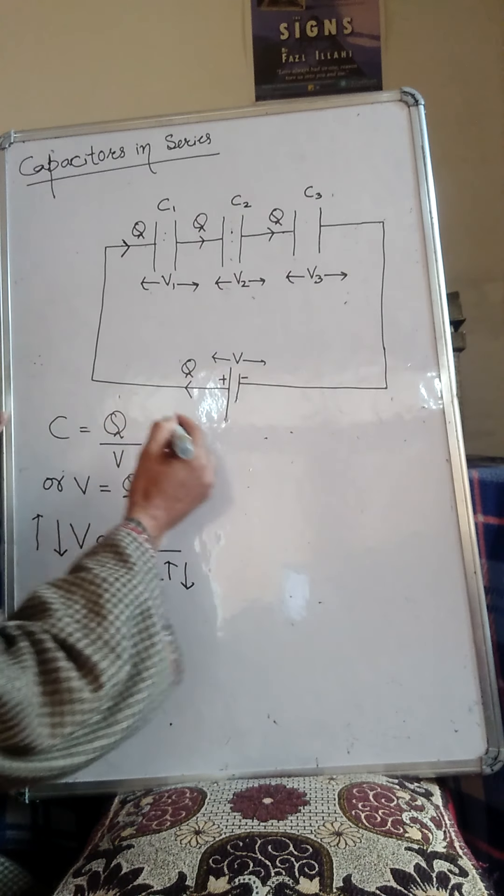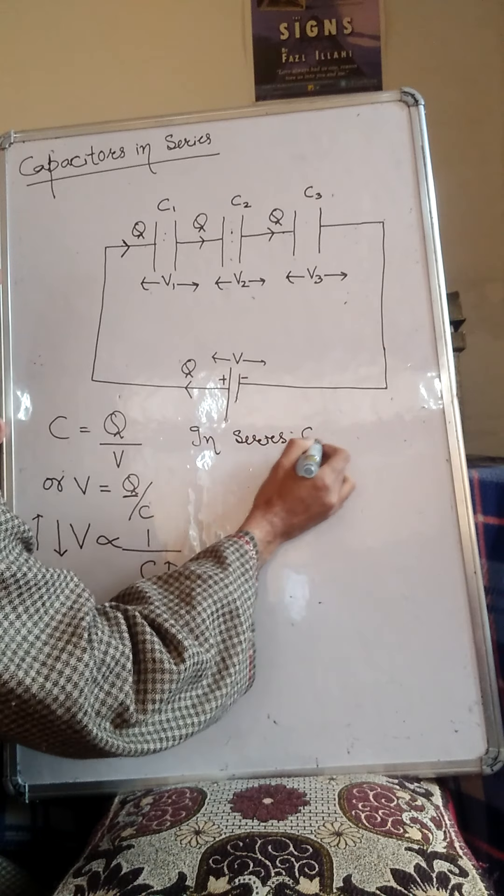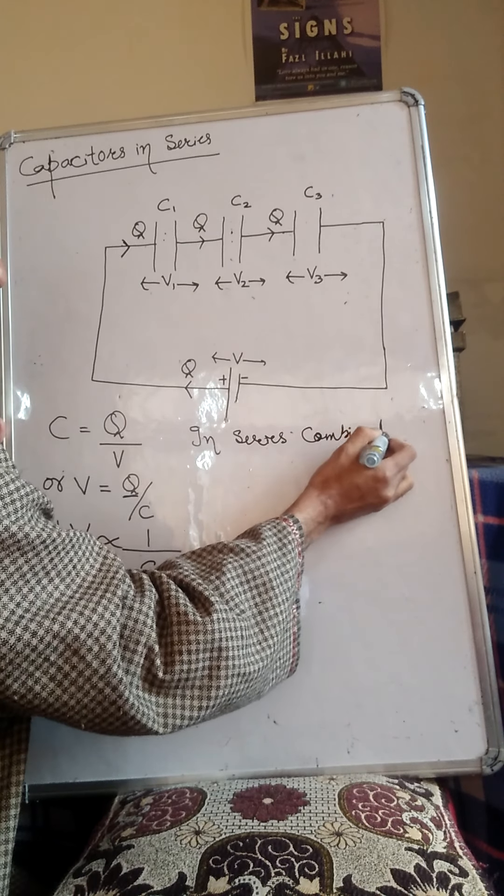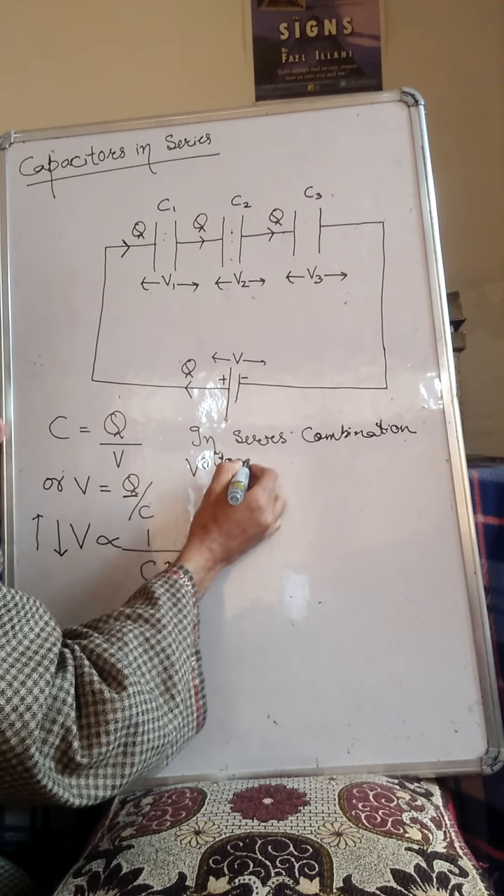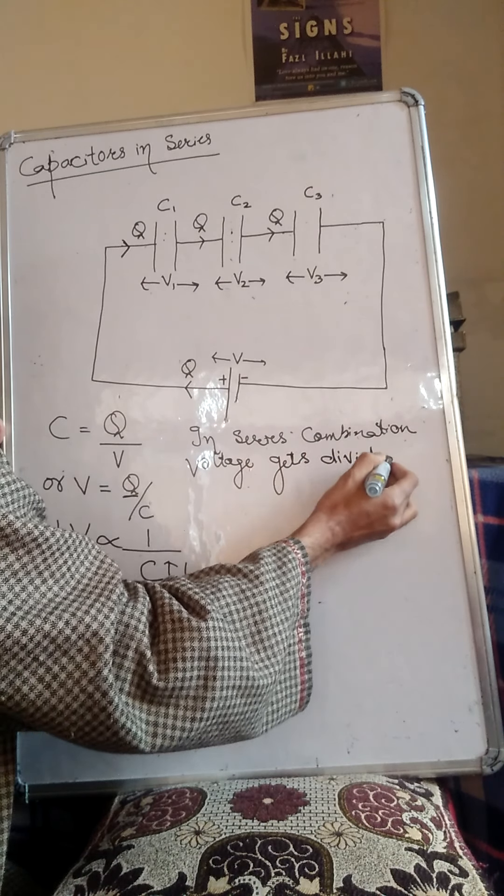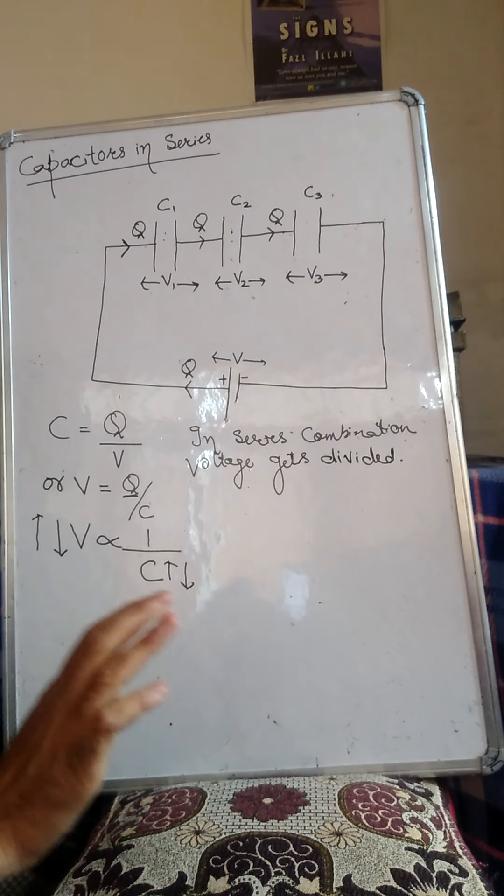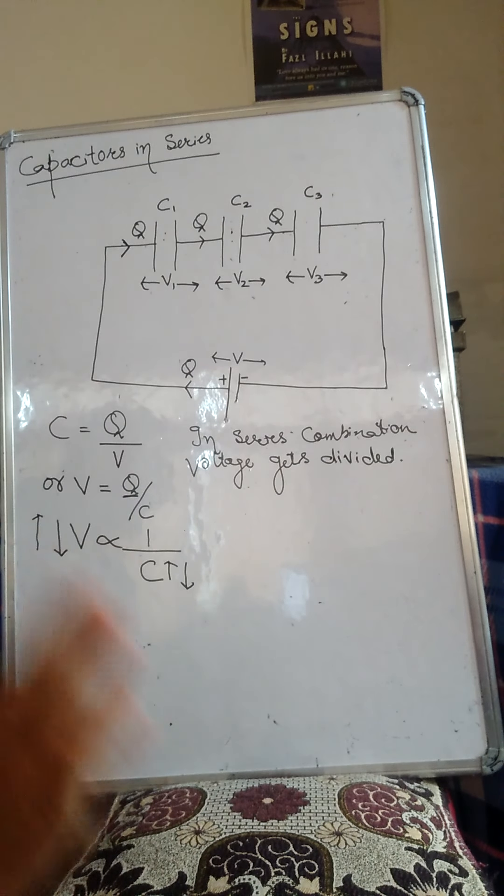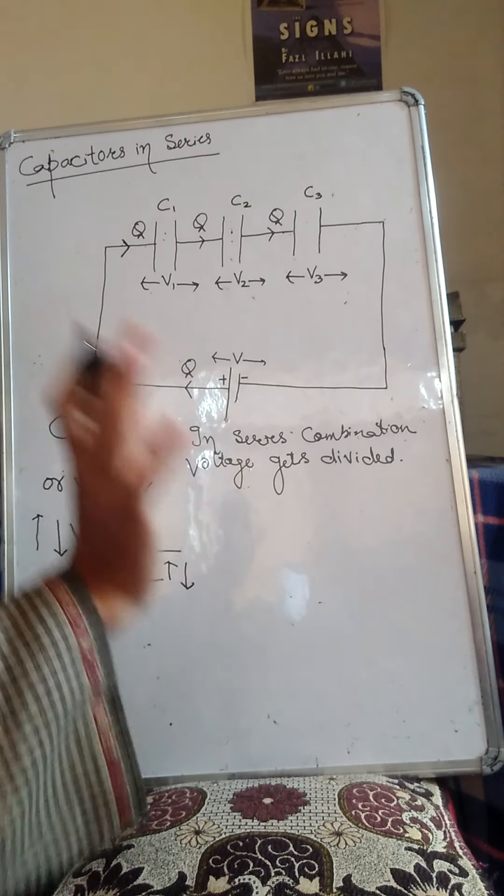In series combination, voltage gets divided. That's why we have one rule, that is known as voltage dividing rule. But charge does not distribute, charge does not divide. And one more point I want to tell you regarding this series combination is that, look here, this positive charge is coming from here.